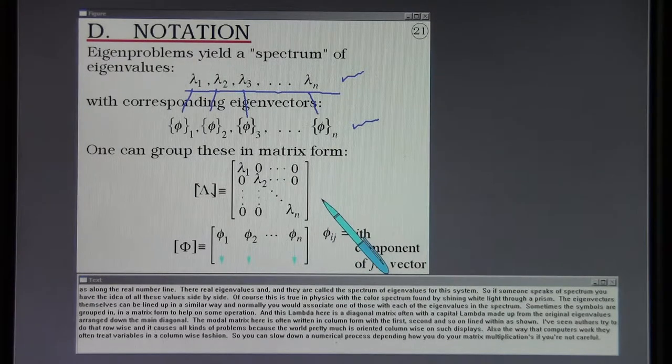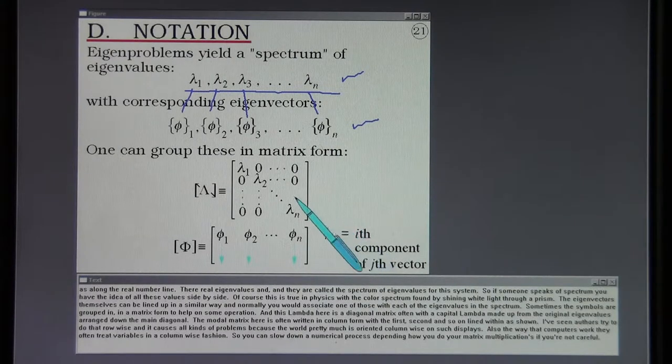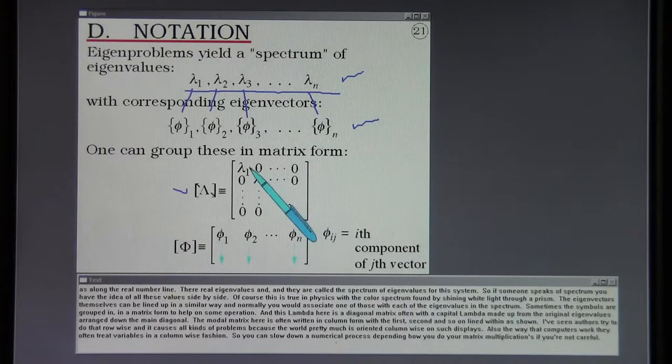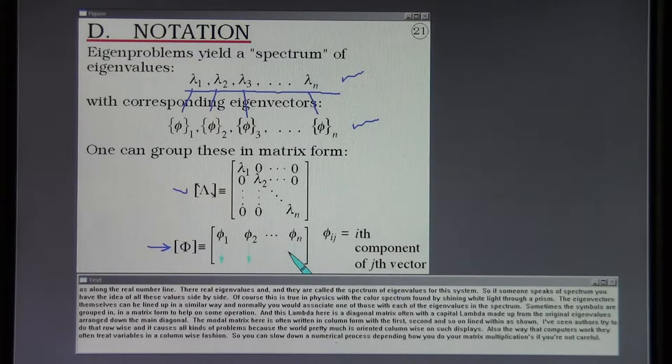Sometimes the symbols are grouped in a matrix form to help on some operation. This lambda here is a diagonal matrix often with a capital lambda made up from the individual eigenvalues arranged down the main diagonal. The modal matrix here is often written in column form with the first, second, and so on lined within as shown. I've seen authors try to do that row-wise and it causes all kinds of problems because the world pretty much is oriented column-wise on such displays. Also the way that computers work, they often treat variables in a column-wise fashion. You can slow down a numerical process depending how you do your matrix multiplications if you're not careful.